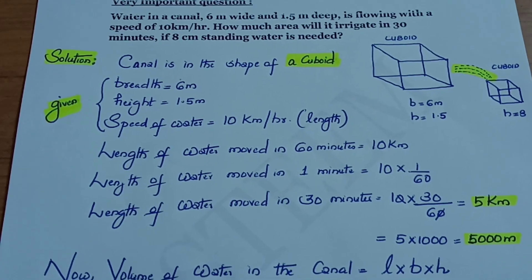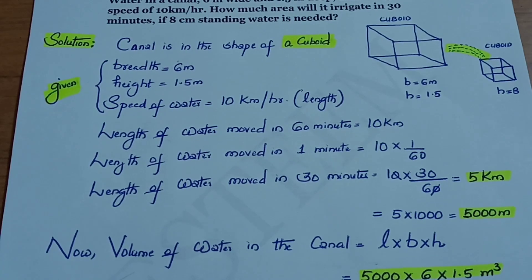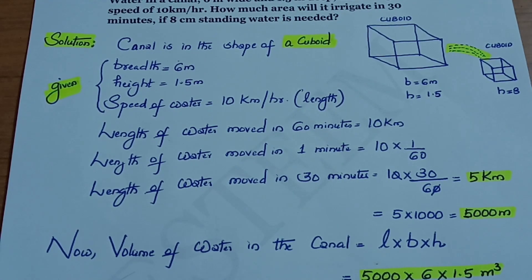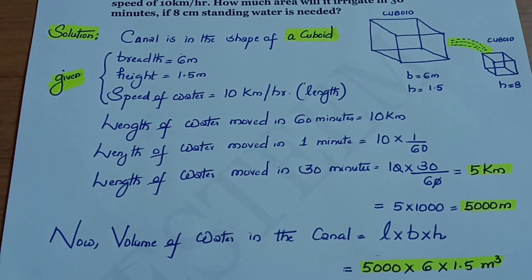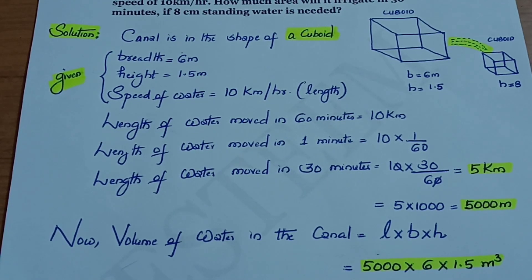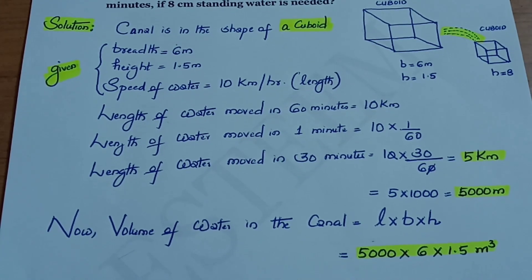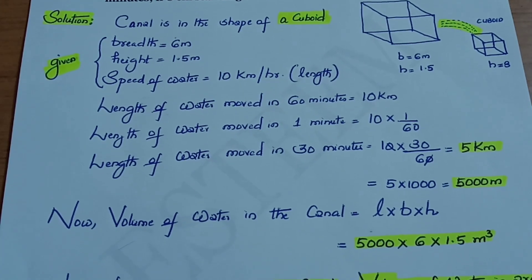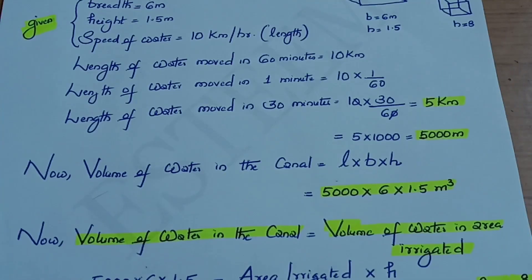The volume of water flowing through the canal is length × breadth × height, that is 5,000 × 6 × 1.5 cubic meters. We have all dimensions in meters, so the answer will be in cubic meters.